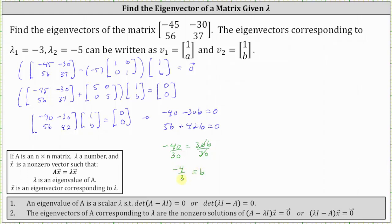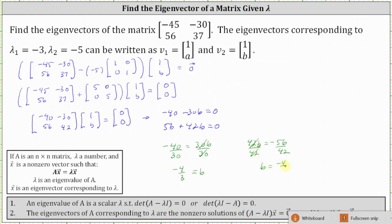Let's also show we get the same result from the second equation. Subtracting 56 from both sides gives us 42b equals negative 56. Dividing both sides by 42 and simplifying, we do get the same result of negative 4 thirds. So now we know the eigenvector v sub 2 that corresponds to the eigenvalue of negative 5 is the vector 1b, which is the vector 1, negative 4 thirds.